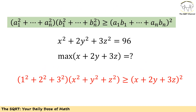Remember, we have x² + 2y² + 3z². The most straightforward approach is to use x, y, z for the second multiplicative term and 1, 2, 3 for the first term. So we'd end up with 1² + 2² + 3² times x² + y² + z² is greater than or equal to x + 2y + 3z, all squared.